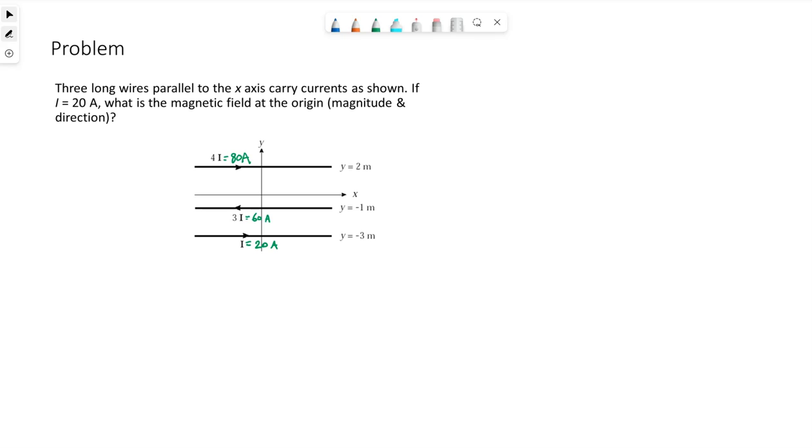Since they're labeled as long wires parallel, so these are long straight wires. So we can use the B of a wire. In the test notes, it's written as μ₀I over 2πD. I'm going to call this top wire wire 1, the middle one wire 2, the bottom one wire 3.